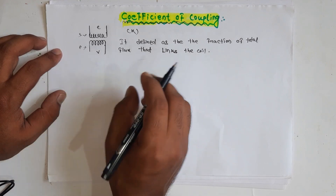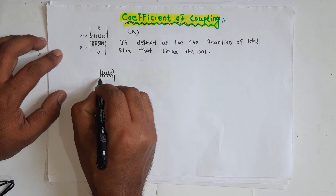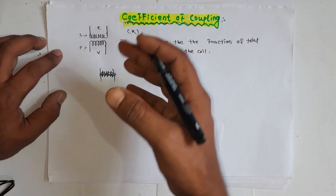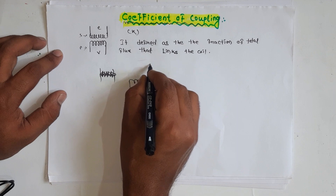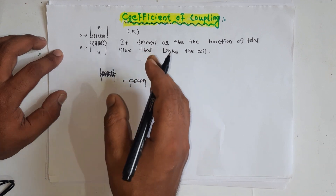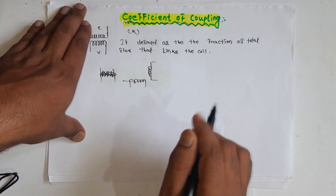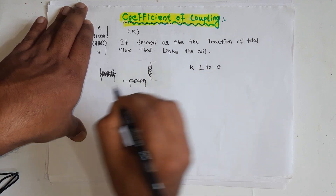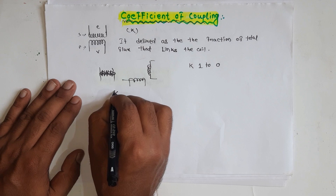Let me show you two or three scenarios. If one coil is like this and another coil is like this, you can see the total amount of flux linking both coils — here the coefficient of coupling is maximum. In another configuration, if the coils are at some distance or in some other direction, no flux is linked, so the coefficient of coupling is 0. When only some part of the flux links, k is between 0 and 1.